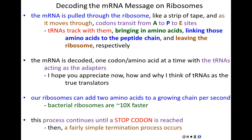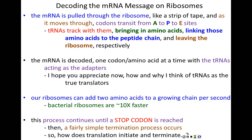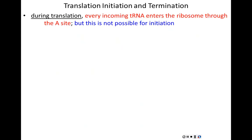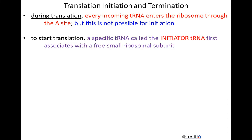Once a stop codon is reached, termination is a pretty simple, straightforward process. Before that, let's address initiation — how translation starts. During elongation, every incoming tRNA carries a single amino acid and enters through the A site. But for initiation to occur, we actually need something already in the P site. So to start translation, we need a specific and unique initiator tRNA that has the ability to enter the P site of the ribosome despite carrying only one amino acid.